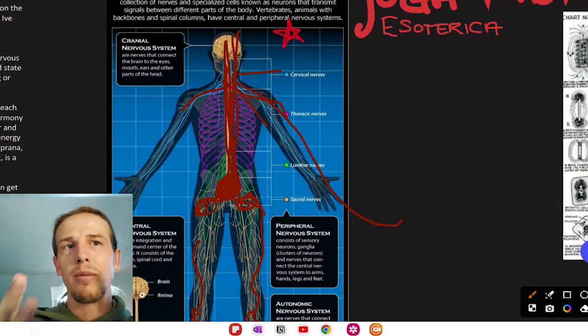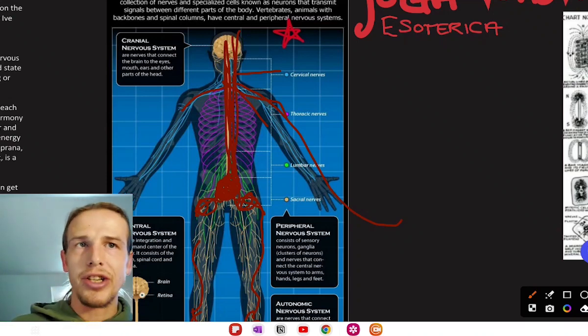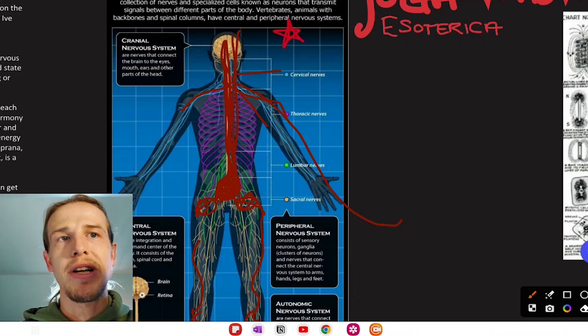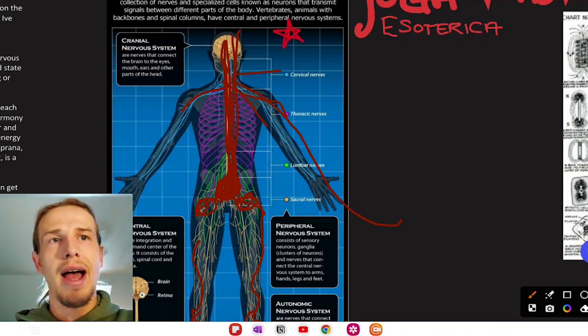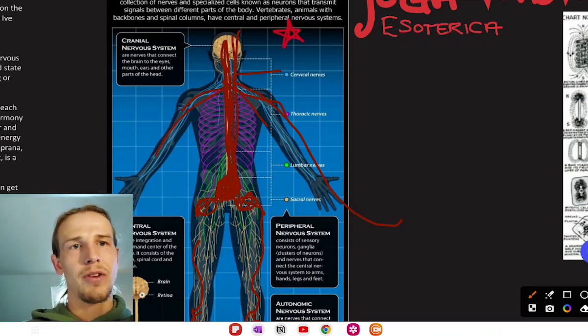My friends, all ailments, all sickness exists as blockages, disruptions in the spinal cord. If you can let your spine be open, your whole body will automatically start to open itself because everything is a manifestation outward from the spine.